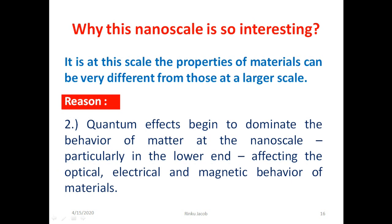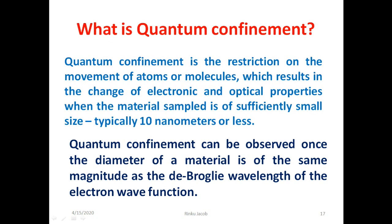The second reason why nanoscale is interesting is that quantum effects begin to dominate the behavior of matter at nanoscale, particularly at the lower end, affecting the optical, electrical, and magnetic behavior of materials. Quantum confinement is the restriction on the movement of atoms or molecules which results in the change of electronic and optical properties when the material size is sufficiently small, typically in the range of 10 nanometers or less. Quantum confinement can be observed once the diameter of a material is of the same magnitude as the de Broglie wavelength of the electron wave function.